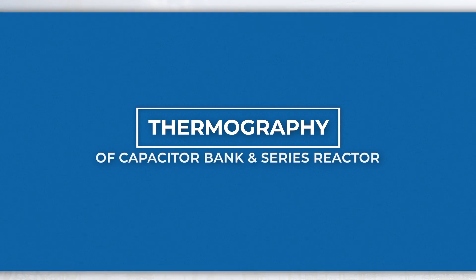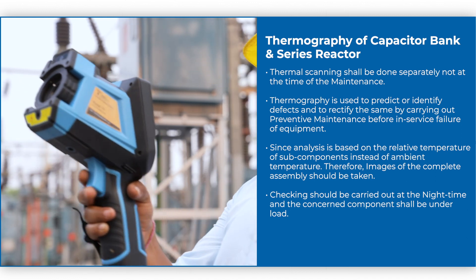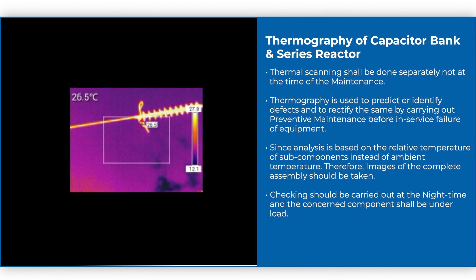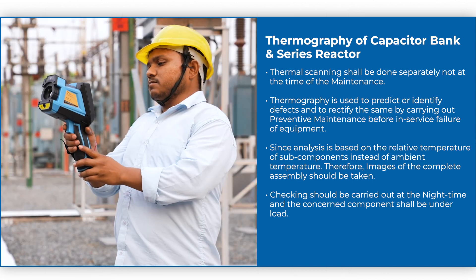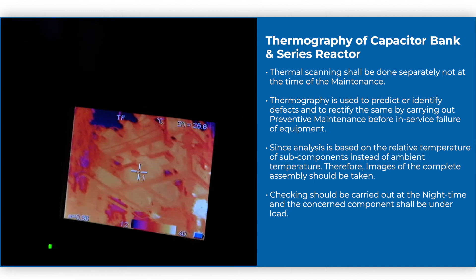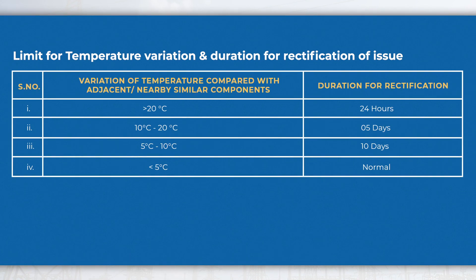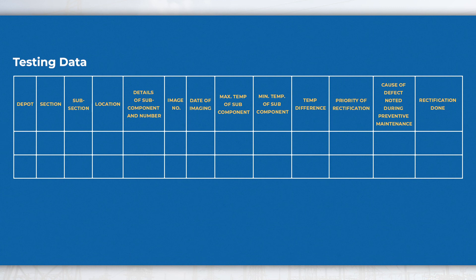Testing data may be recorded in the specified format for further investigation and future reference. Thermography of capacitor bank and series reactor: thermal scanning shall be done separately, not at the time of maintenance. Thermography is used to predict or identify defects and to carry out preventive maintenance before in-service failure. Since analysis is based on the relative temperature of subcomponents rather than ambient temperature, images of the complete assembly should be taken. Checking should be carried out at night time and the concerned component shall be under load. The limit for temperature variation and duration for rectification of the issue is given in the table.